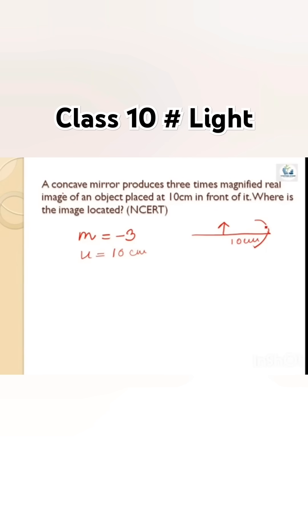When measuring from right to left, by sign convention you use negative. So the object distance u will be minus 10 centimeters.